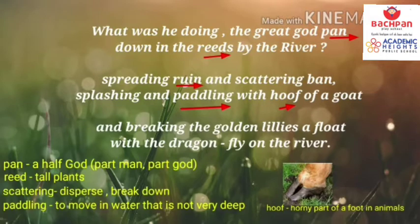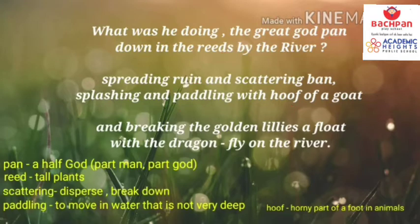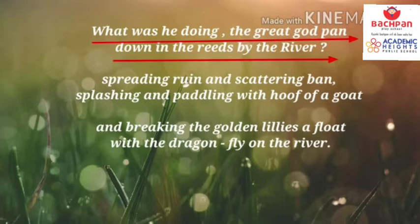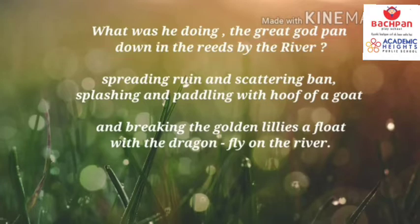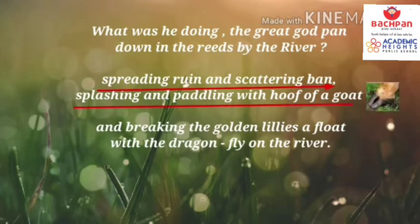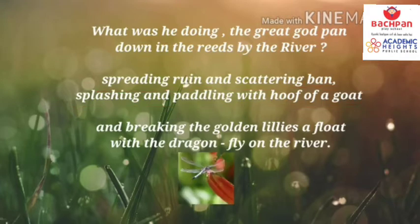And hoof is a horny part of a foot in animals. Let's understand the meaning. 'What was he doing, the great god Pan, down in the reeds by the river?' In these lines the poet begins with a question. He talked about the great god Pan — Pan is known as a god of hunting, music, and shepherds. Pan goes down by the river in the reeds, spreading ruin and scattering, splashing and paddling with the hoof of a god. Pan is creating a scene of destruction, tugging and scattering everything in the shallow water. He was breaking the golden lilies which were floating on the river and harming the dragonflies which were resting on those lilies.